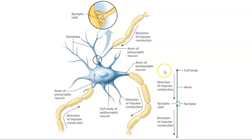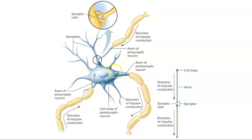Let's look at how neurons communicate with each other. This axon is going to synapse with a dendrite. The axon coming into the synapse is from the presynaptic neuron, and the dendrite on the other side is from the postsynaptic neuron. The impulse travels toward the cell body and then away from the cell body along the axon. At the synapse, the axon of the presynaptic neuron releases chemicals called neurotransmitters that communicate with the postsynaptic neuron, and the signal is then transmitted along the axon of the postsynaptic neuron.